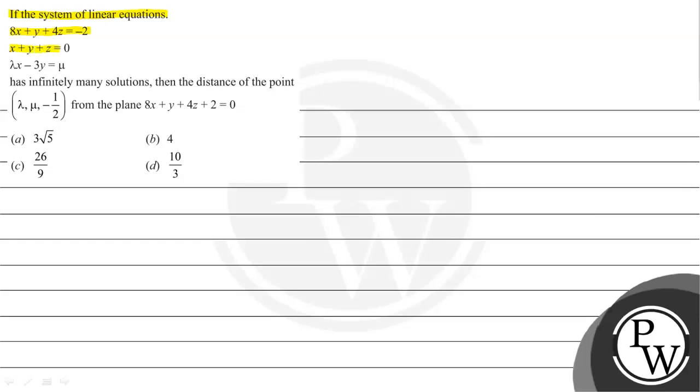x plus y plus z equal to 0, lambda x minus 3y equal to mu has infinitely many solutions, then the distance of the point (lambda, mu, minus 1/2) from the plane 8x plus y plus 4z plus 2 equal to 0.